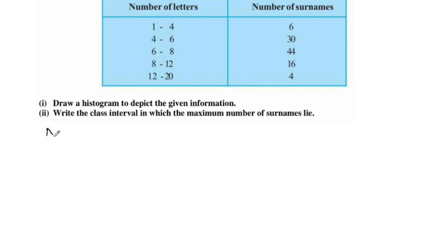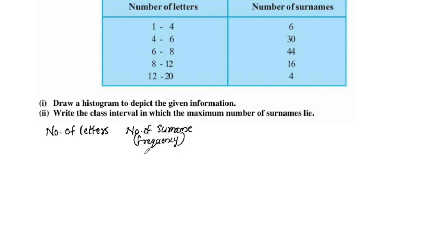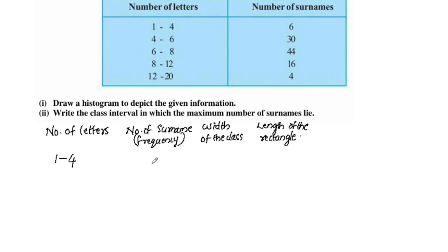Now we adjust the table. The first column is the number of letters, the second column is the number of surnames — that is frequency. We can also add the width of the class, and the last column is the adjusted frequency, which is the length of the rectangle. Number of letters: 1 to 4, number of surnames: 6.